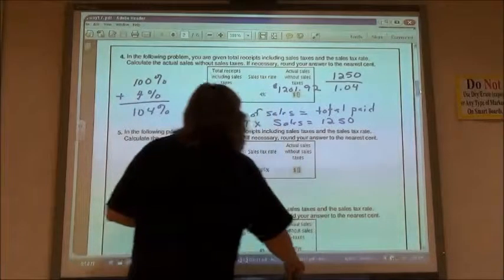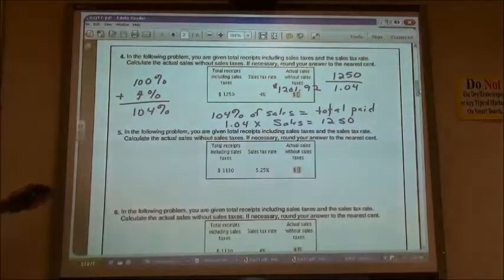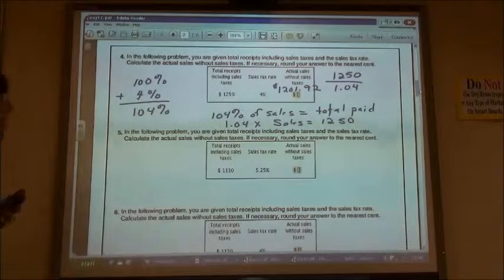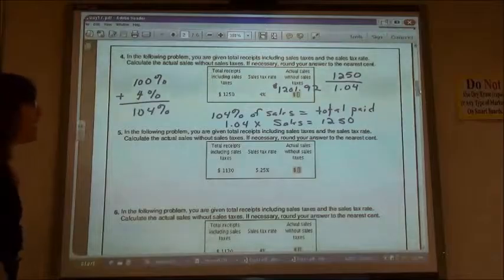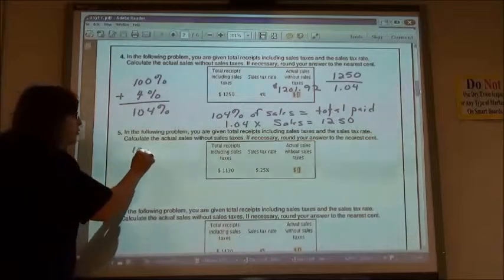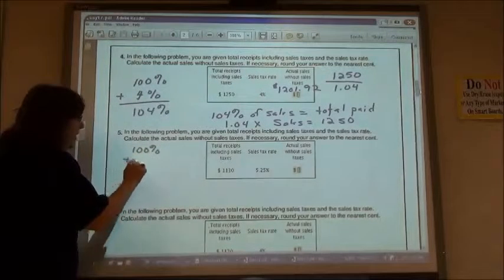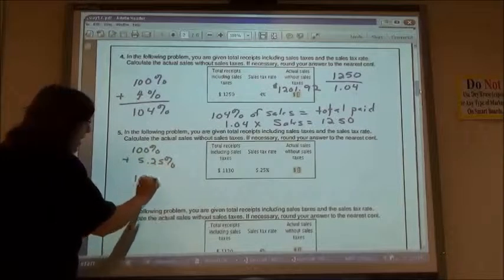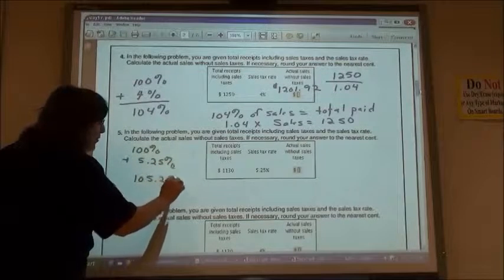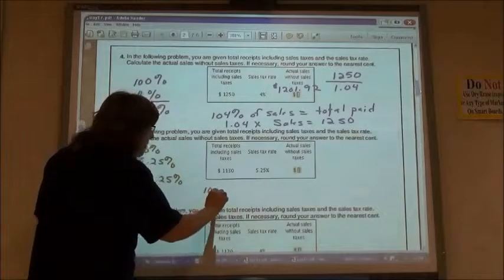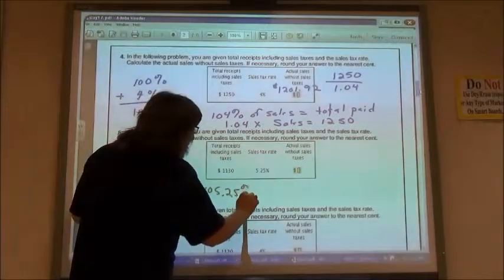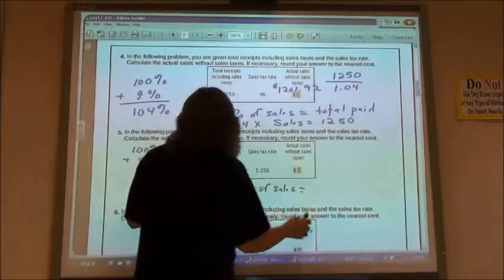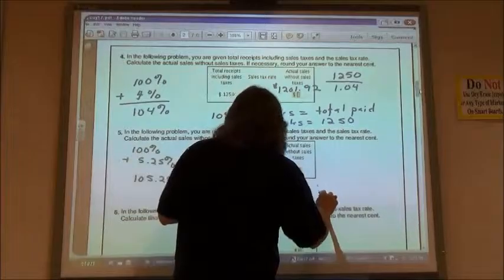And so the next two are going to be sort of like that. My total receipt, including the sales tax, was $1,130. My sales tax rate was 5.25%. So again, my sales were 100%, but I paid tax of 5.25%, so I want to use 105.25%. So 105.25% of my sales is equal to $1,130, that total that I paid.